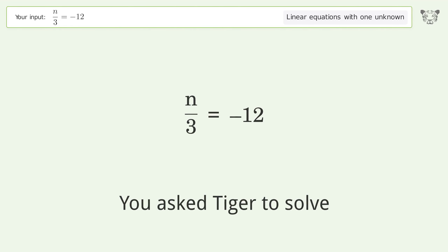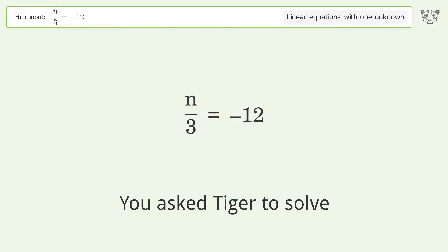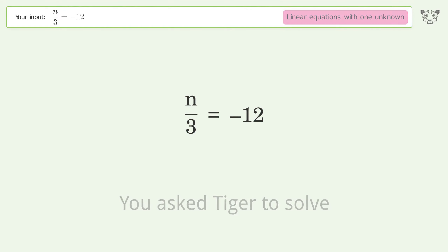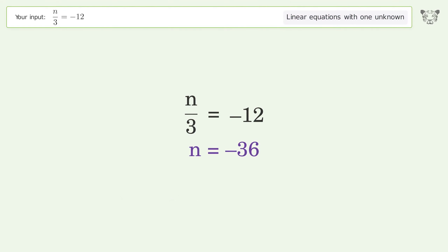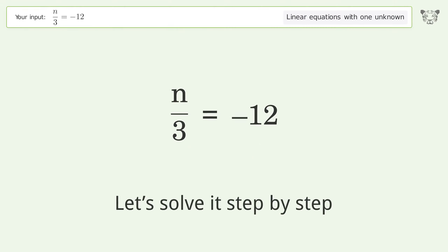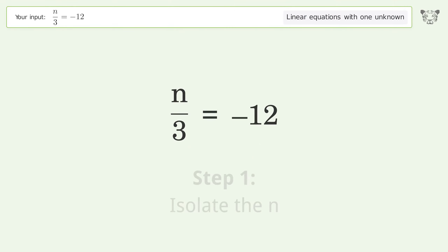You asked Tiger to solve this — it deals with linear equations with one unknown. The final result is n equals negative 36. Let's solve it step by step to isolate n.